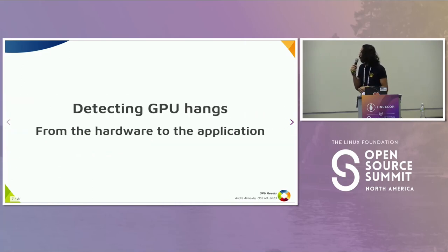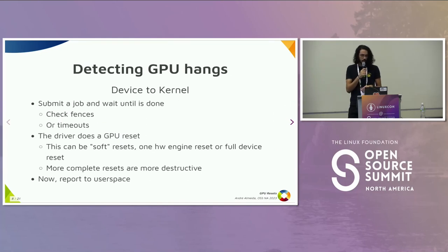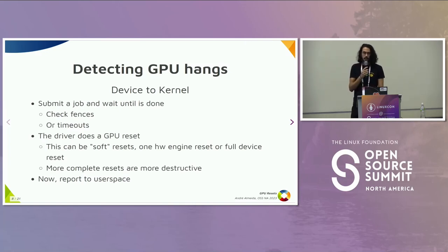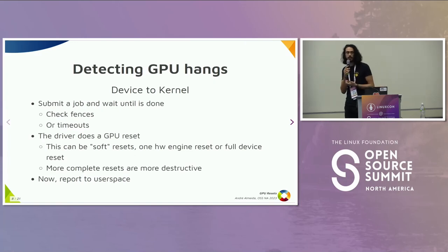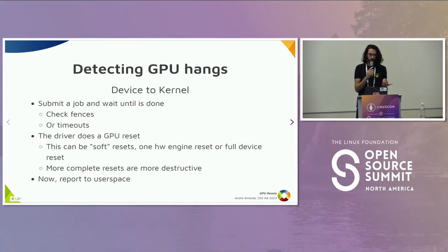Now I'm going to show how we detect GPU resets from the hardware until it reaches the application. Basically, on DRM — the Linux kernel drivers — you submit jobs to the device and then later you can check if your memory fences have been reached or if the timeout has expired. Then the Linux kernel driver can do the reset if it finds out that a job is taking so long to run that it might be stuck. You can't even be sure of that, but you assume it's stuck and then you take action.